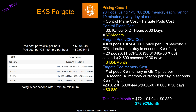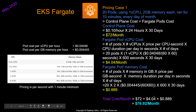For memory cost: 20 pods × 2 GB × (0.004445 / 3600) per second × 600 seconds × 30 days ≈ $0.88 per month. So the total monthly cost is $72 (control plane) + $4.04 (vCPU) + $0.88 (memory) = approximately $77 per month. This is significantly cheaper than the regular EKS cluster cost of $210 per month.